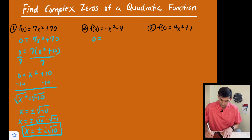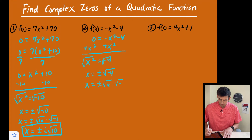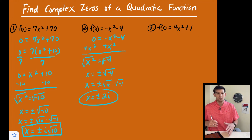For number two, we're going to do the same thing. Zero equals negative x squared minus four. Add x squared to both sides, so we get x squared equals negative four. Now we take the square root, so x equals positive or negative square root of negative four. We write this as positive or negative square root of four times the square root of negative one. Square root of four is two, and the square root of negative one is i, so our answers are positive and negative two i.